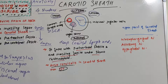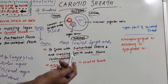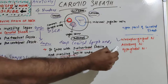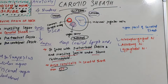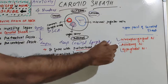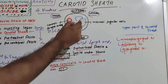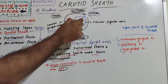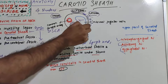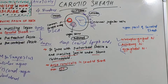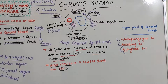In the upper part, the carotid sheath also contains the glossopharyngeal nerve, the accessory nerve, and the hypoglossal nerve, which pierce the fascia of the carotid sheath. These are cranial nerves 9, 11, and 12, and these three nerves pierce the carotid sheath at an upper position.